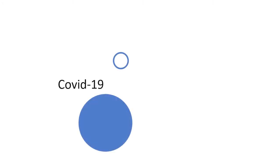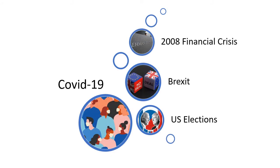Economic uncertainty implies the future outlook for the economy is unpredictable. It can arise from large episodes of events such as the COVID-19 pandemic, the US presidential election, Brexit, and the 2008 financial crisis. Or it can also be small episodes of concerns about a country's GDP, inflation, and unemployment outlook.